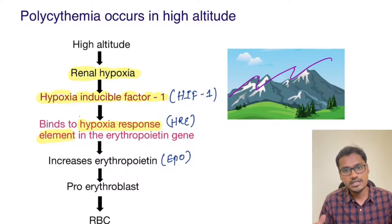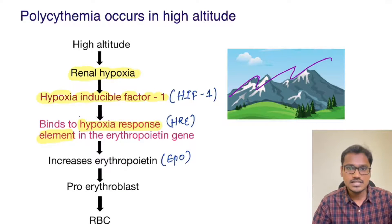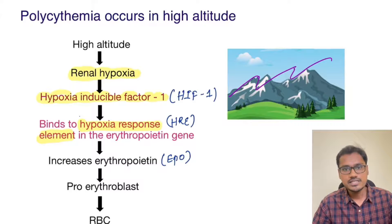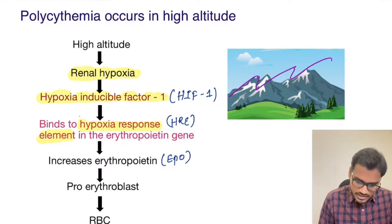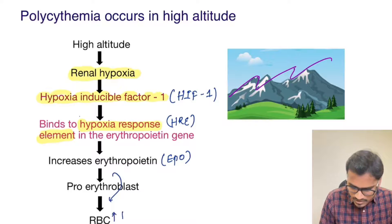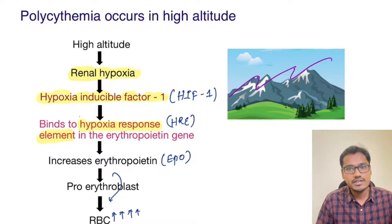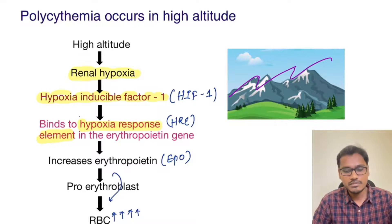This erythropoietin production directly stimulates the pro-erythroblasts — the precursor cells of the RBCs. When these precursor cells are stimulated, that increases the RBC levels and develops polycythemia at high altitude.